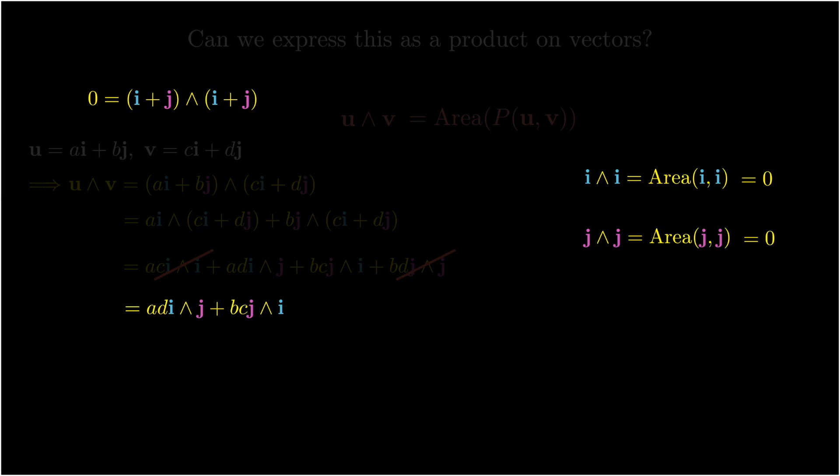So we have that zero is equal to (i+j)∧(i+j). Expanding this out, we get (i∧i) + (i∧j) + (j∧i) + (j∧j). This is exactly what we did before. Again, the first term and the last term will cancel, and we see that zero is equal to i∧j + j∧i.